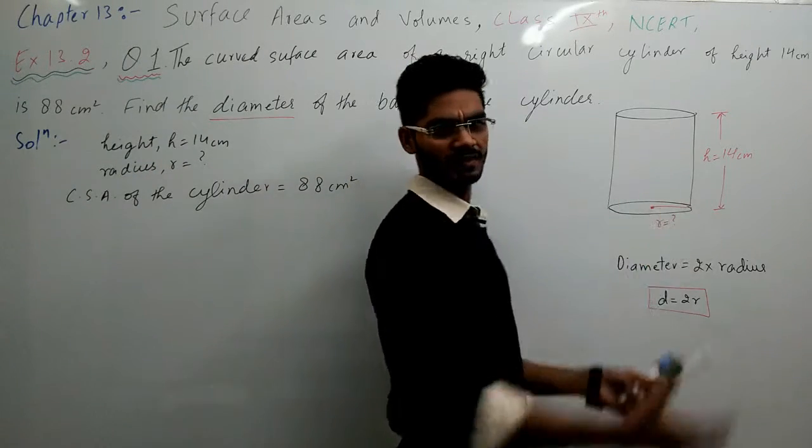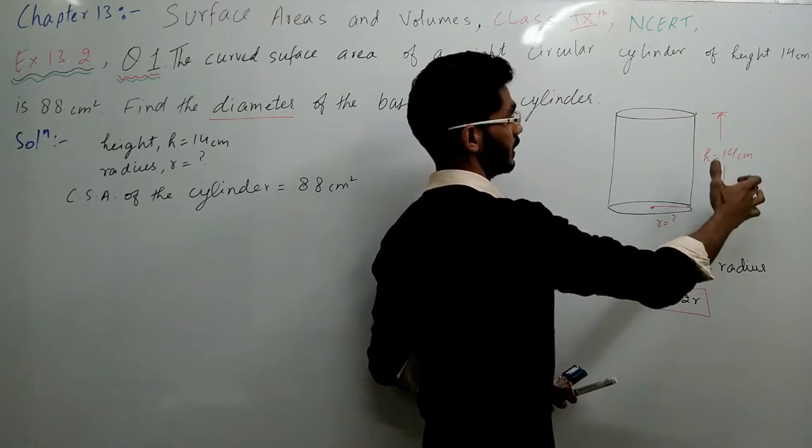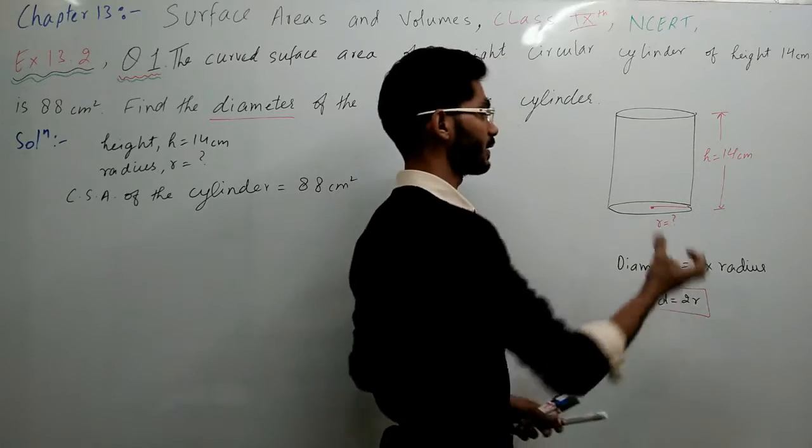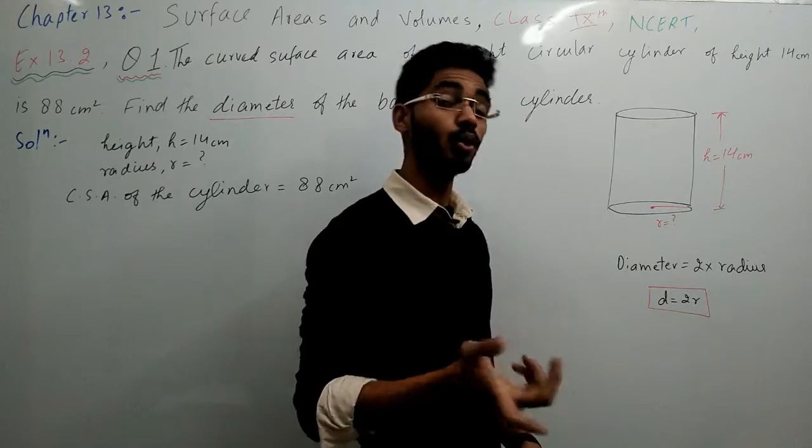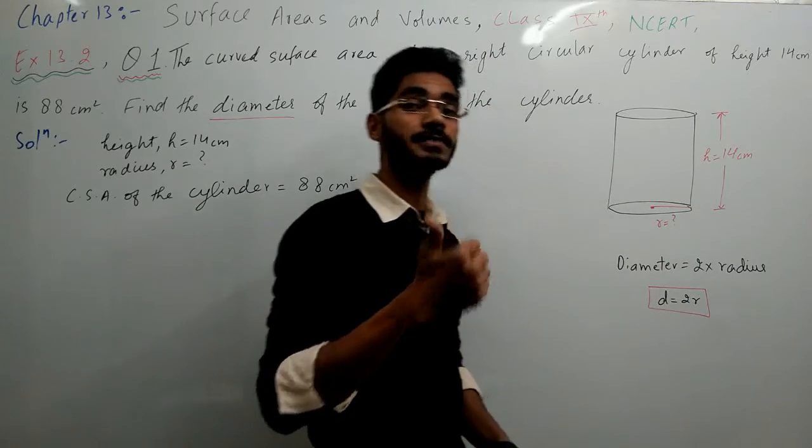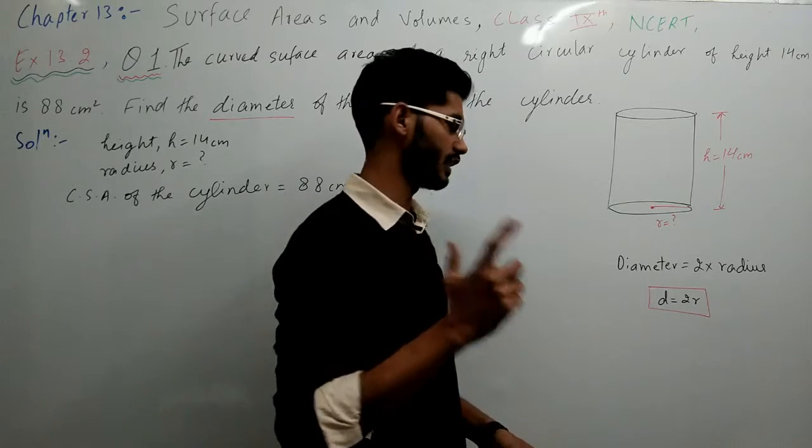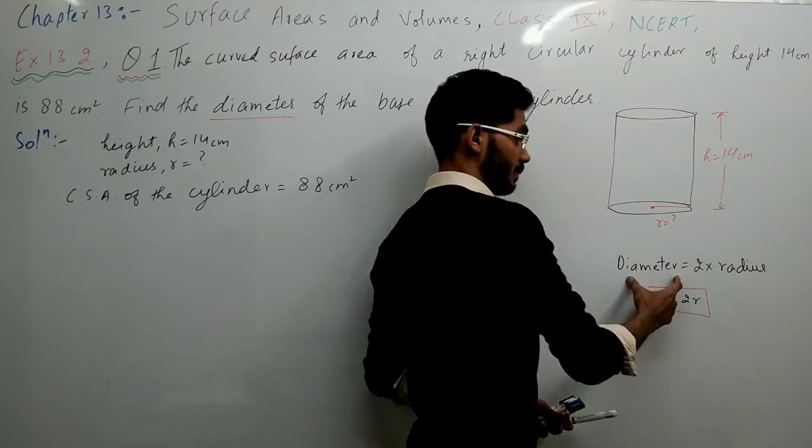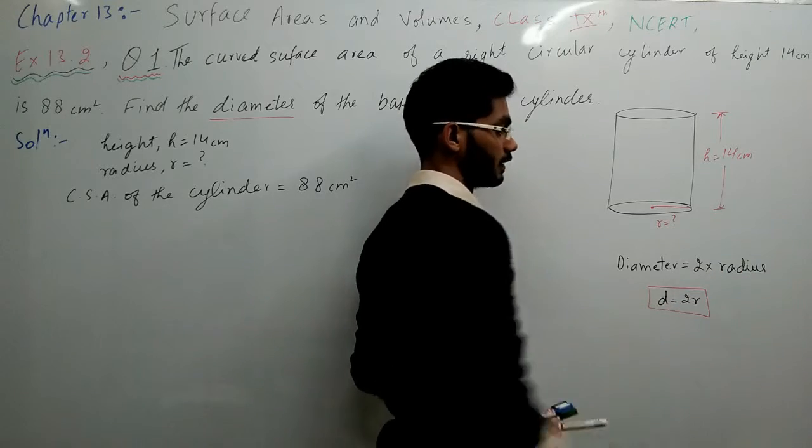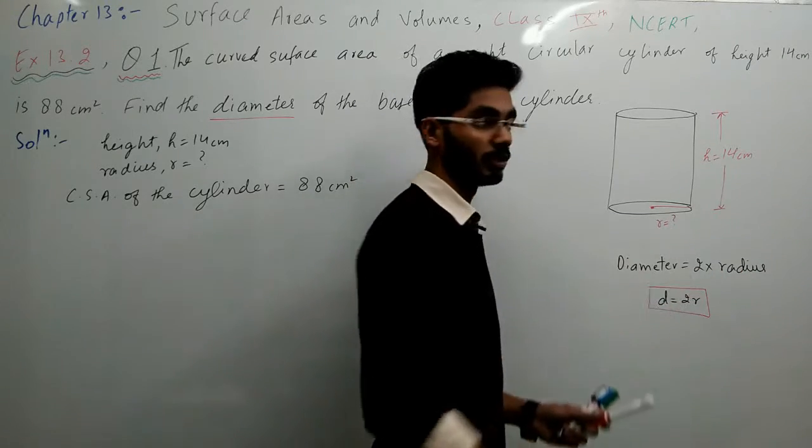So I have a rough diagram. Cylinder hai, jis ki height ye 14 centimeter. Radius hamei pata nahi. Unhonne poochha kya hai? Unhonne poochha aap se diameter. To diameter ki ek relationship maine aap ko batai thi introduction wali video me and that is diameter is the twice of radius. Matlab ki radius ka double ho ta hai.